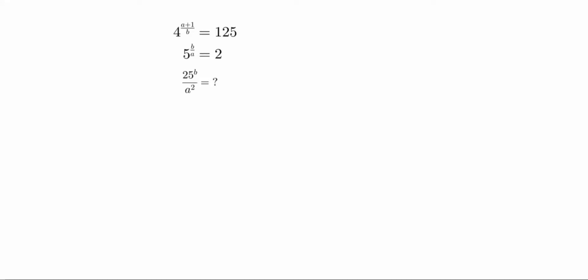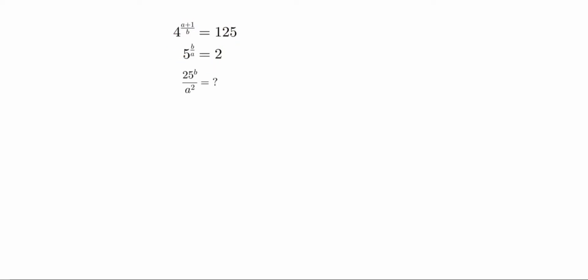Hi friends. Welcome to my channel Excellent Ideas in Education. Today we are going to solve this problem. 4 power a plus 1 by b is equal to 125, and 5 power b by a is equal to 2. These two values are given. So we need to calculate 25 power b by a square is equal to what.